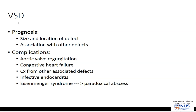Some of the complications of VSD would include aortic valve regurgitation, congestive heart failure, complications from other associated defects as mentioned, infective endocarditis, and also Eisenmenger syndrome — where there is reversal of the left-to-right shunt, eventually to a right-to-left shunt, and therefore giving rise to paradoxical abscess.